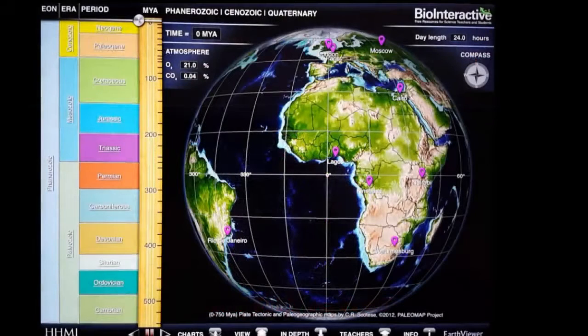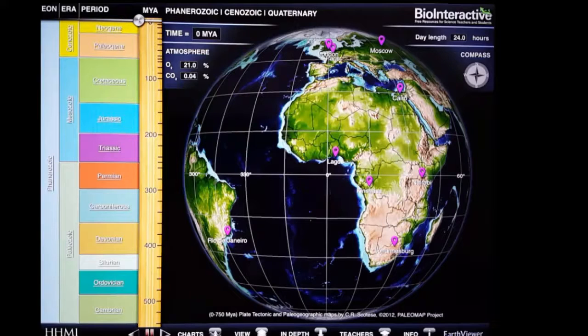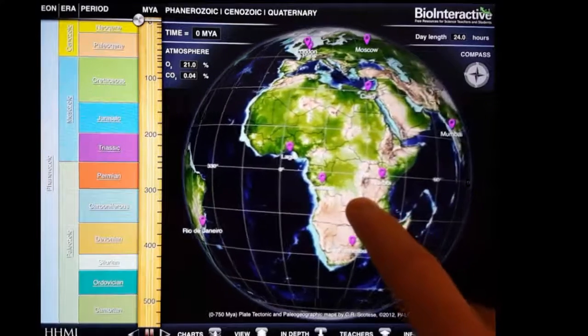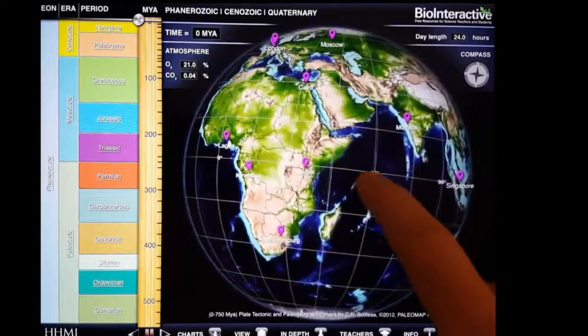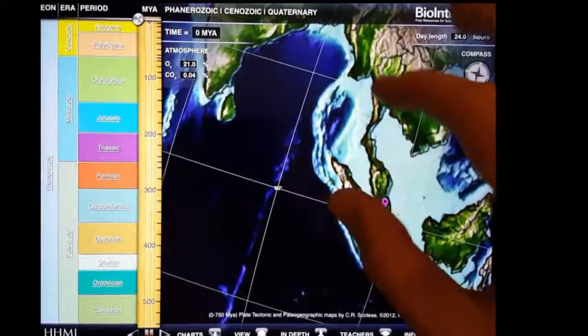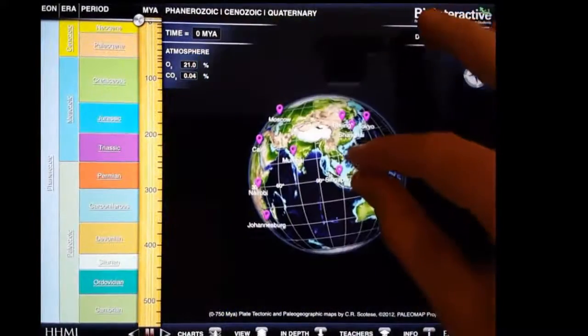After starting EarthViewer, you will see a map of the Earth. You can move the map by dragging your finger in the direction that you would like to go. You can zoom in by pulling your fingers apart, and zoom out by pinching them together.